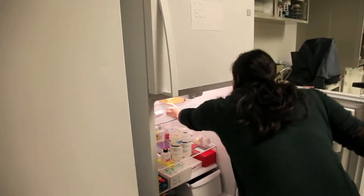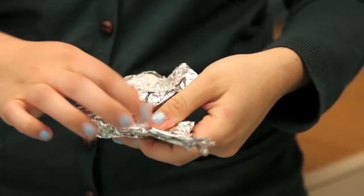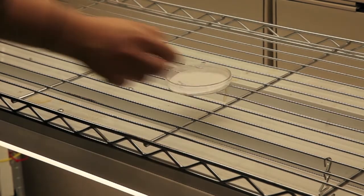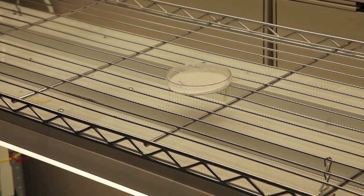After stratification, remove your plates from your refrigerator or cold room, unwrap them and place them in the light. This can either be a special light rack or your classroom desk. Make sure to write down the day you took out the plates. This is day zero.